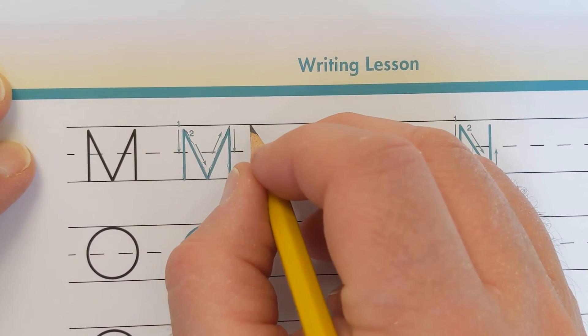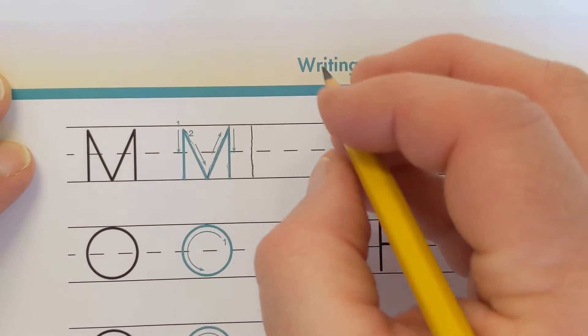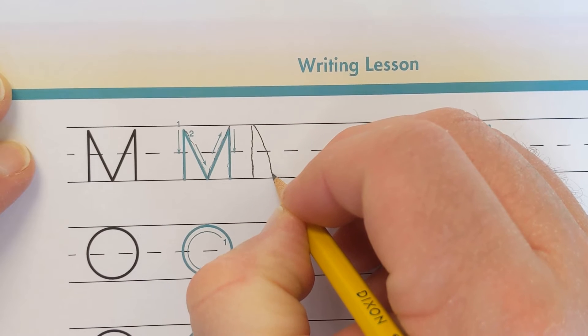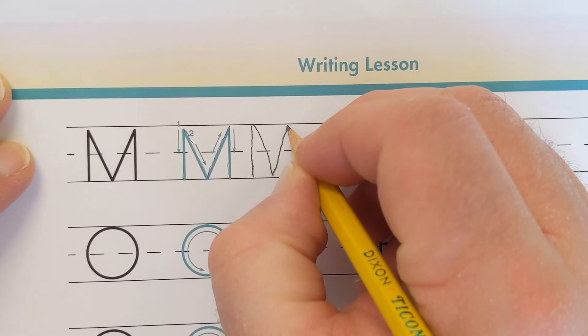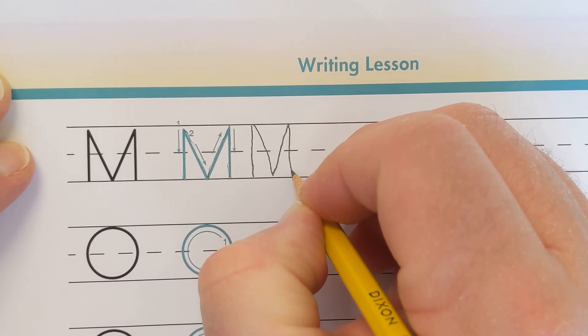Watch as I write the capital letter M again. Make a straight line going down. Make a diagonal line going down and to the right. Make a second diagonal line, this time going up and to the right. Make another straight line going down.